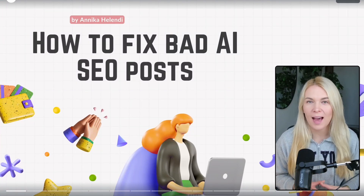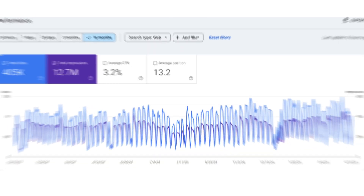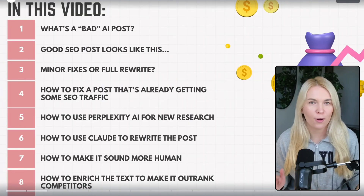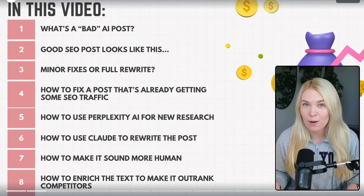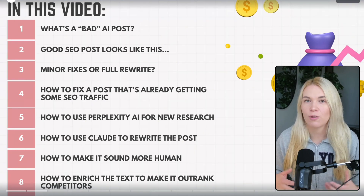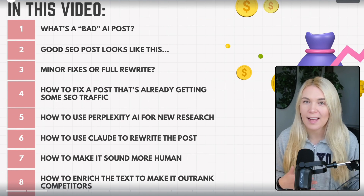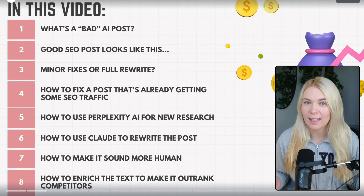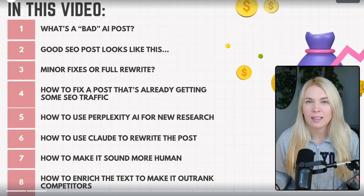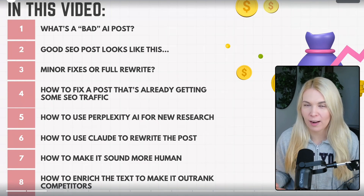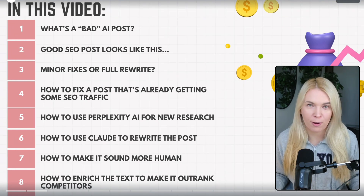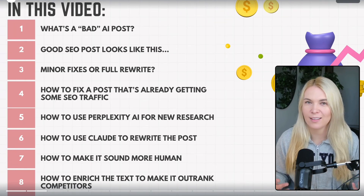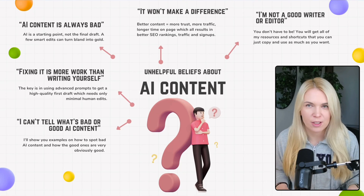In this video I'm going to show you how to fix bad AI posts and make them rank on Google's first page and also get discovered by AI search engines. By the end of this video you will know what exactly is a bad AI post, what a good SEO post looks like, should you do minor fixes or a full rewrite, how to fix a bad AI blog post that is already getting some SEO traffic but not ranking on the first page of Google, how to use Perplexity AI and Claude to create better drafts for topics that need a full rewrite, how to make AI drafts sound more like a human, and lastly how to add human elements that AI can't do right now to make your blog post more valuable and rank in Google. But first let's get some of the objections out of the way.